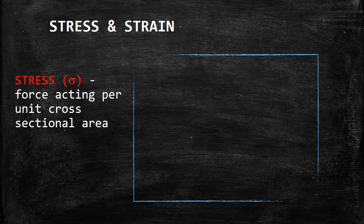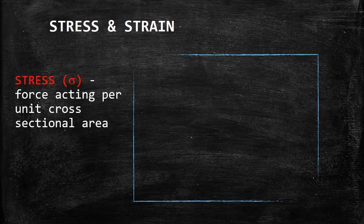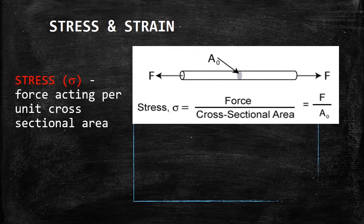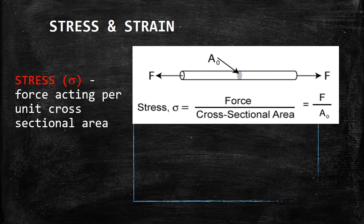Stress, symbolized as sigma, is the force acting per unit cross-sectional area. As seen on this picture, a pair of tensile force is acting upon a cross-sectional area of a wire. In mathematical form, it is expressed as force over cross-sectional area, or F over A₀.